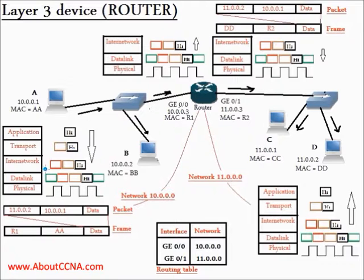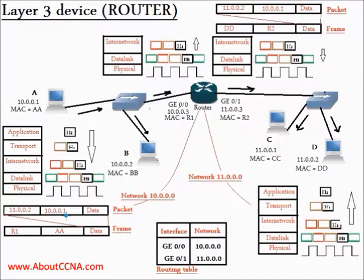Let's take a look at the internetworking packet. In the internetworking packet, we will see the data, and we will see that the destination IP address will be 11.0.0.2, which is the IP address of computer D, and the source IP address will be 10.0.0.1, which is the IP address of computer A, the source computer.